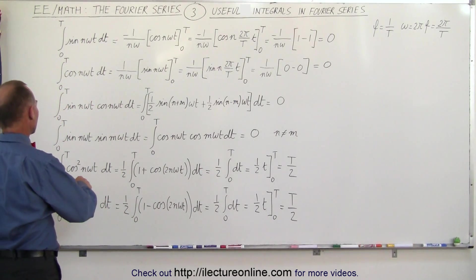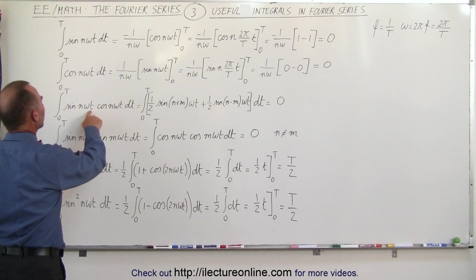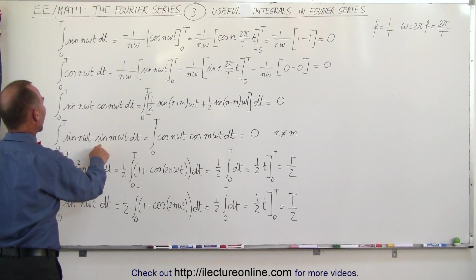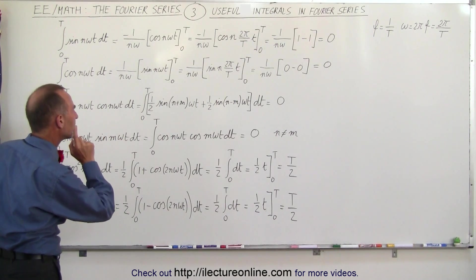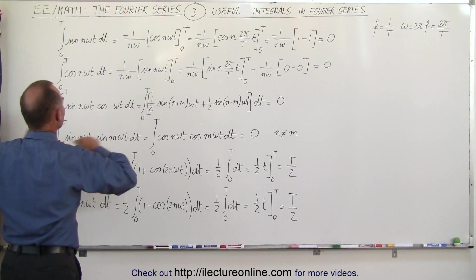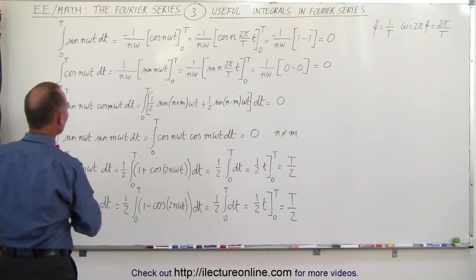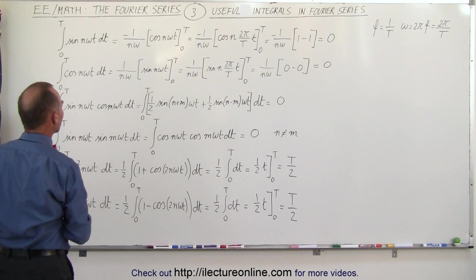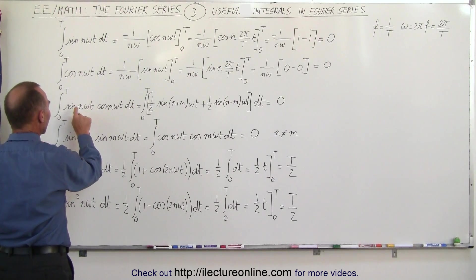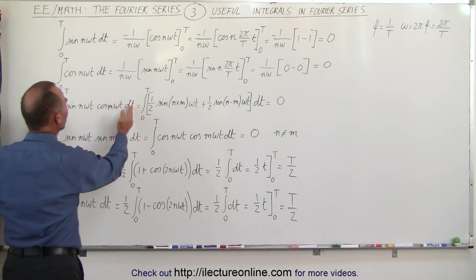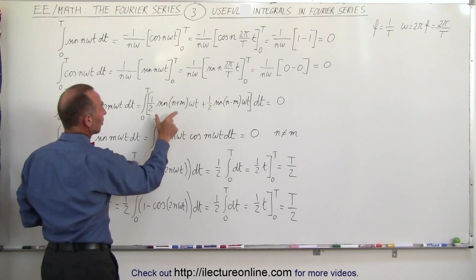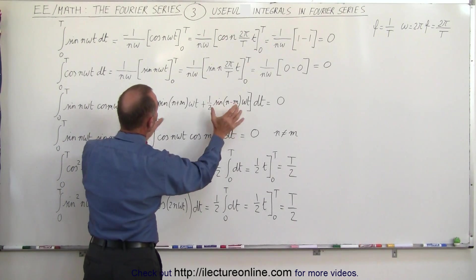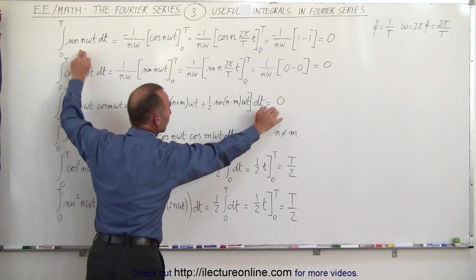What if we have the sine of n omega t times the cosine of m omega t — note that this should be m, not n, so n and m are both integers but can be different values. As long as n and m are not the same, we can rewrite it and notice that this is the sine of some integer times omega t, which again looks like our earlier integral and will be equal to zero.